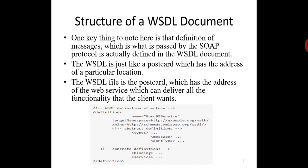One key thing to note here is that the definition of messages — which is what is passed by the SOAP protocol — is actually defined in the WSDL document. The WSDL document actually tells a client application what types of SOAP messages are sent and accepted by the web service. In other words, the WSDL is just like a postcard which has the address of a particular location, providing the details of the person who delivered the postcard. In the same way, the WSDL file is the postcard which has the address of the web service that can deliver all the functionality that the client wants.